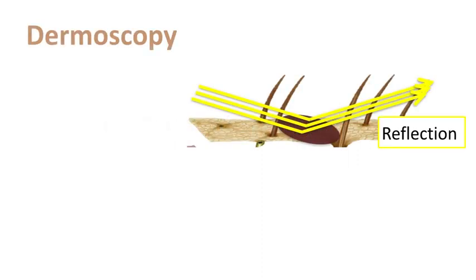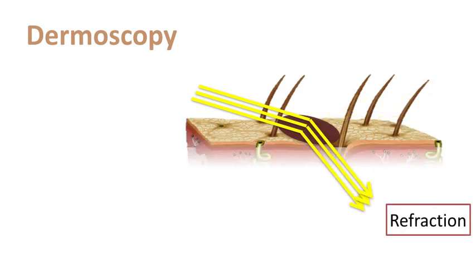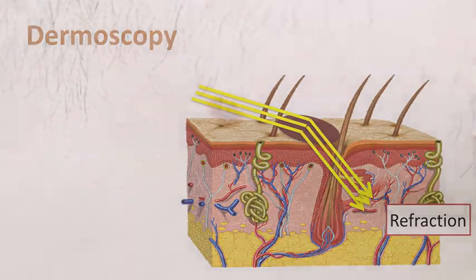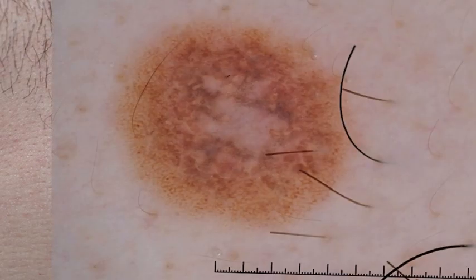Let's use dermoscopy. So what happens when we place the dermatoscope over the skin lesion? Very briefly, what we are doing is getting rid of that reflection and instead increasing refraction. So what we were seeing clinically, now we start seeing structures underneath the stratum corneum that we were not able to see with our naked eye.